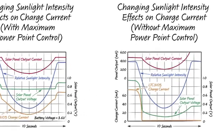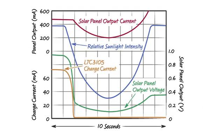In this graph, the conditions are the same except the maximum power point control was disabled by shorting the MPPC pin to ground to illustrate the need for maximum power point control. Notice that for a similar 10% drop in sunlight, the panel's output voltage quickly drops to about 200 millivolts, which is below the converter's minimum input voltage, with a resultant drop in output current.